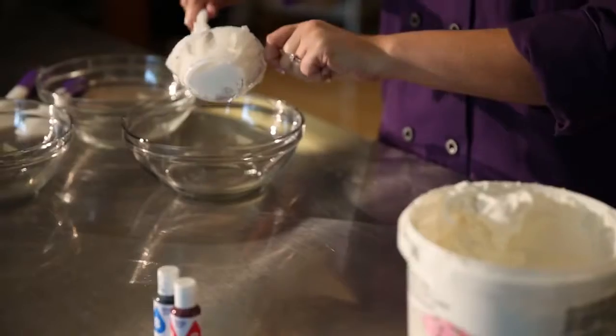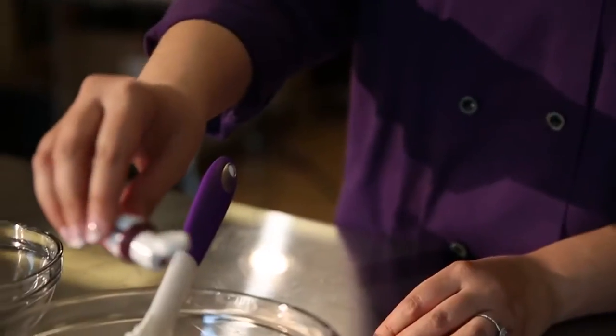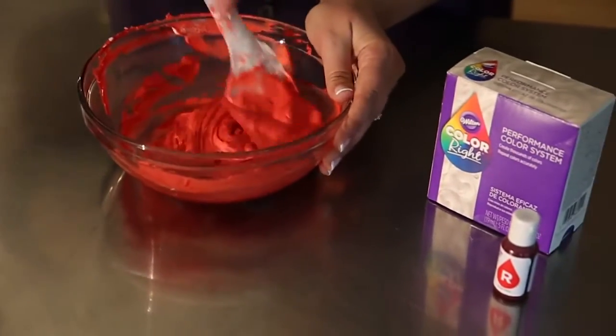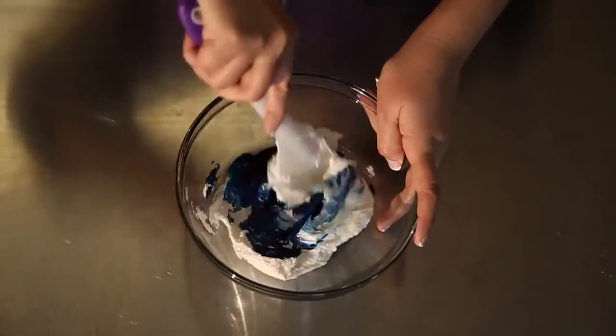Begin by measuring one cup of icing into a mixing bowl. Color your icing red using the Quick Count Color Formula Chart found in your Color Right Performance color system. Using those same Wilton tools, color your icing blue.